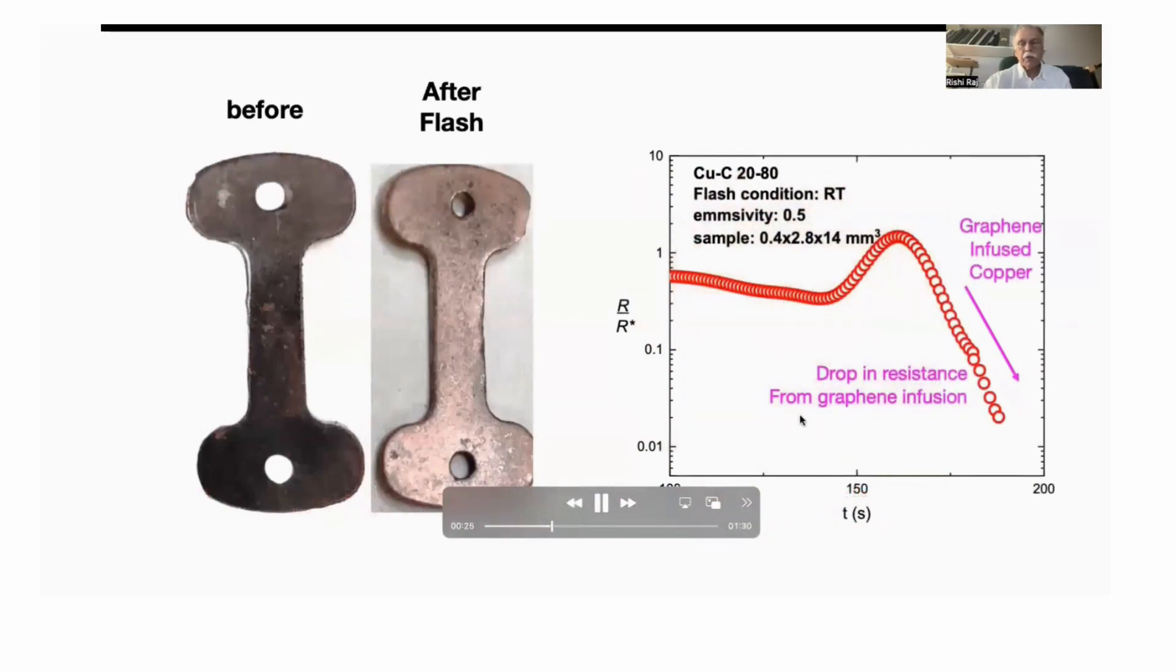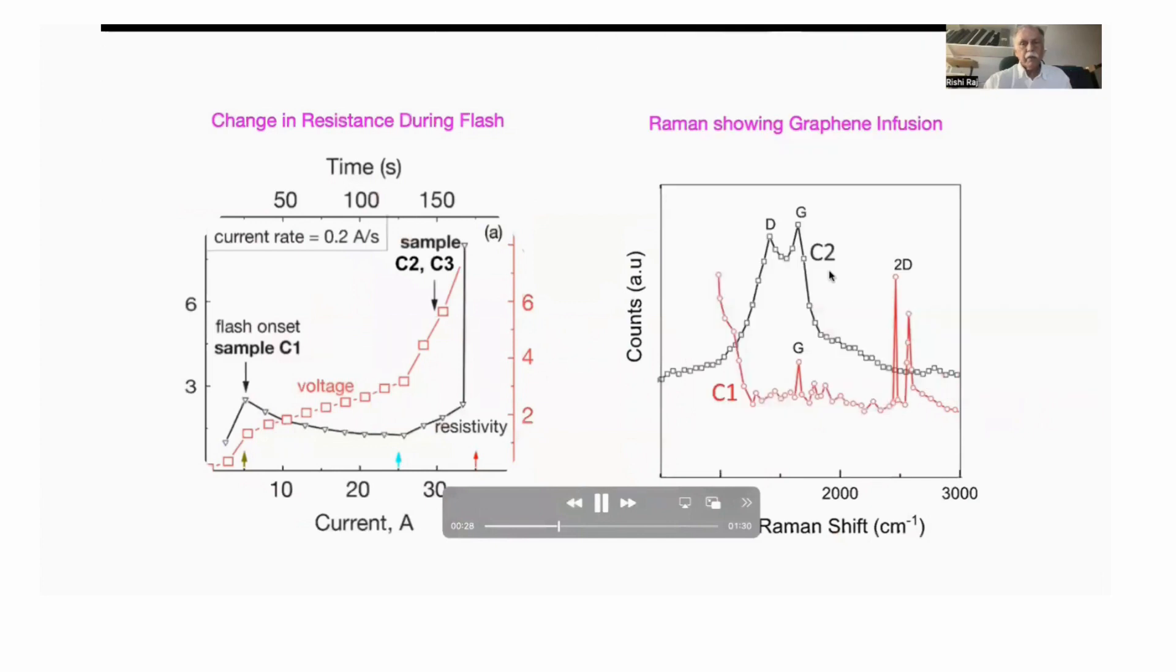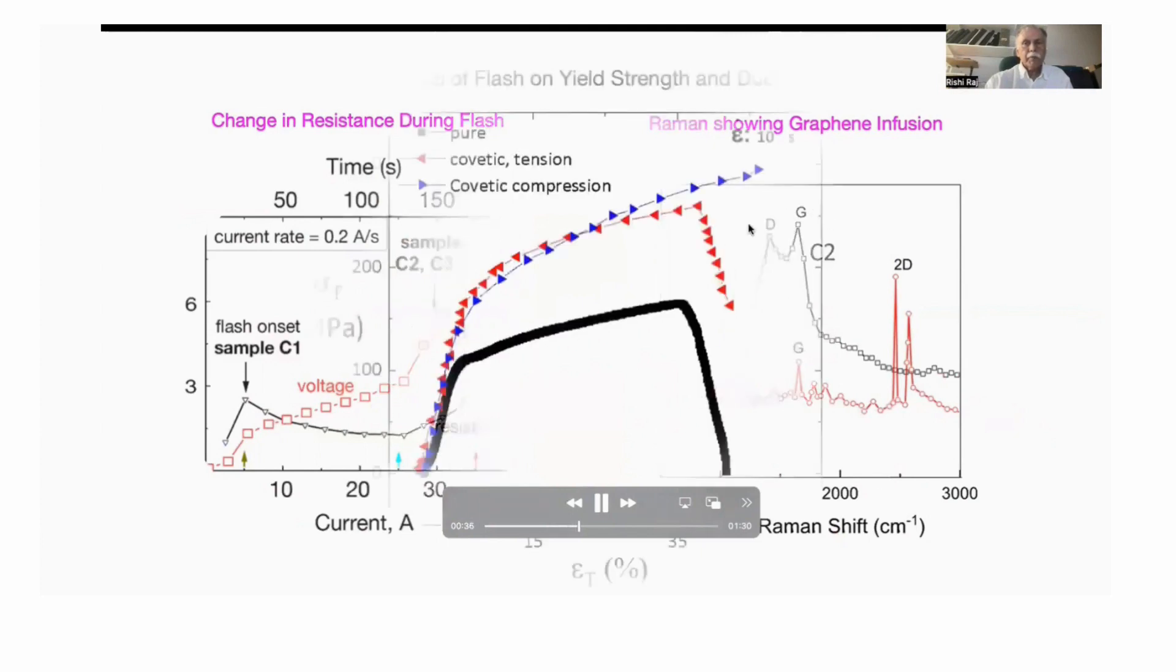And here's the resistance that it changes with time. And you can see that the resistance begins to decline at long time. This shows the development of the graphene in the Raman spectrum.